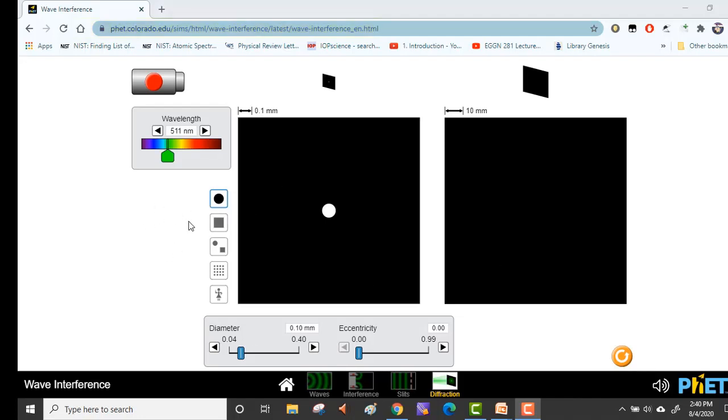We are using a green laser only for the purpose of our video here and this can be done with any color that you please. The setup has a laser light which falls on a small aperture, circular in this case. We can change the shape of the aperture as well.